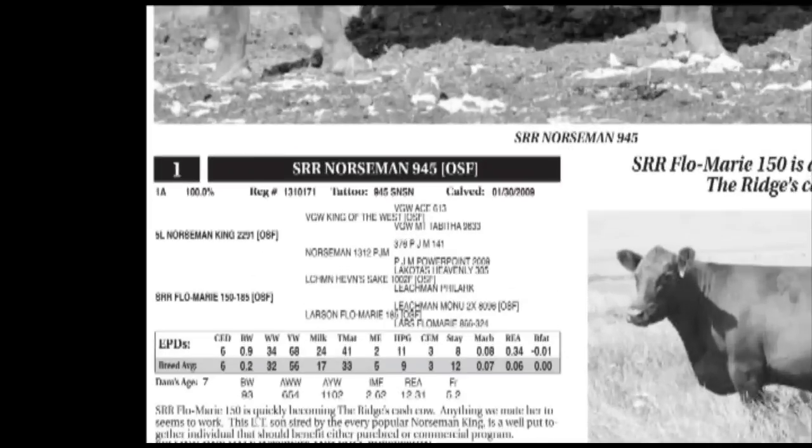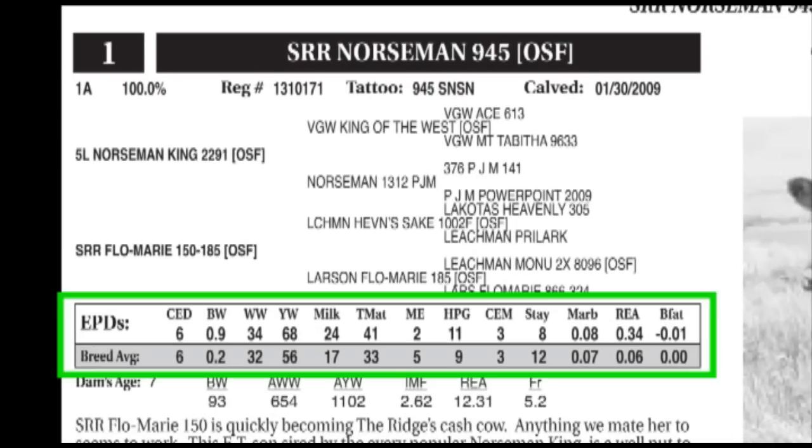So far, Clint, we've really talked about actual weights, adjusted weights, and ratios, and those are simply measurements of how well that animal performed. They are nowhere near what an animal can pass on to its next generation of offspring, and that's truly what a commercial bull customer is after. So the last category would be EPDs, and those are the only pieces of data that can accomplish the goal of genetically describing cattle.